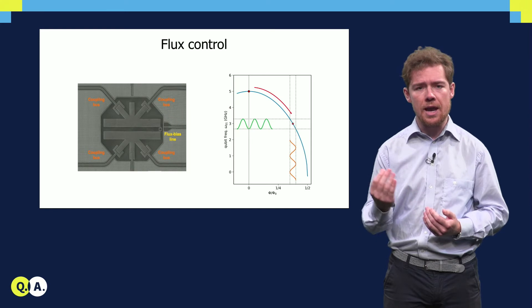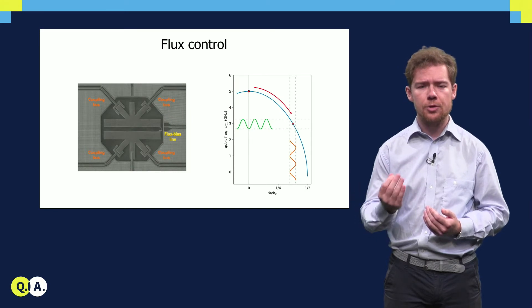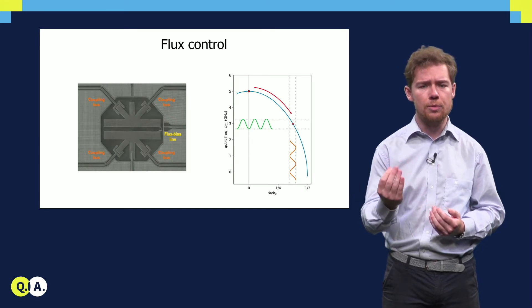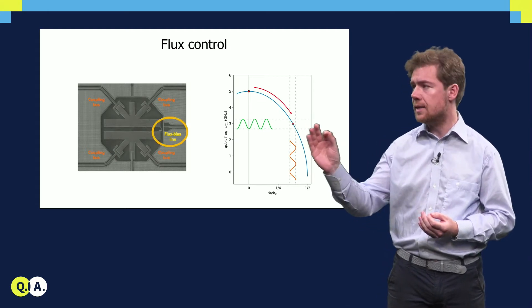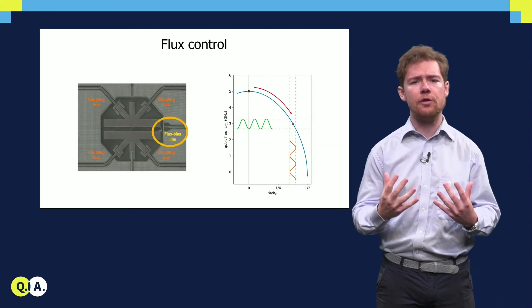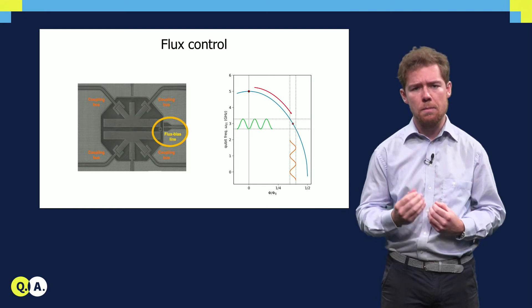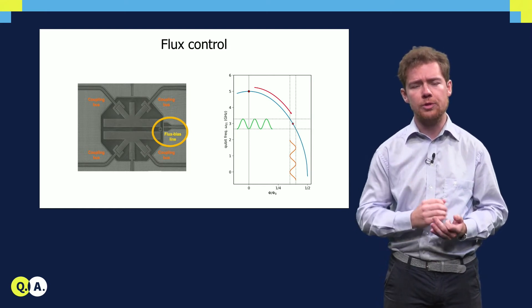To be able to tune in and out of resonance with an interaction, the transition frequency of a transmon qubit must be controlled. By applying a current to the flux bias line, the amount of flux through the SQUID loop of the transmon changes, making it possible to control the qubit's frequency.